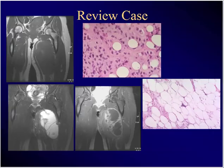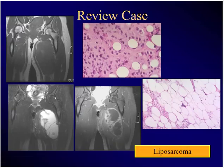45-year-old with a progressive mass in the thigh, painful — who finally comes in because he's having problems putting his pant leg on, with this photomicrograph. What's the diagnosis? Liposarcoma. Remember, there's fatty tissue here but it's not normal — it doesn't follow fat signal.